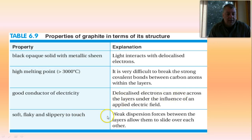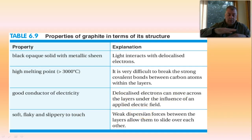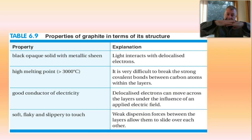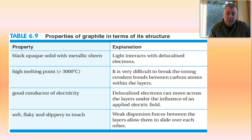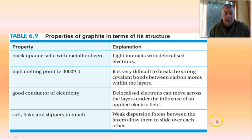Soft and flaky — that's explained by the weak dispersion forces. The dispersion forces between the layers are weak, and therefore the layers can slide. That's why it's used as a lubricant, especially in high-temperature situations, or as a dry lubricant where you don't want any other liquids, hydrocarbons, or contamination. So it has some very specialized uses.